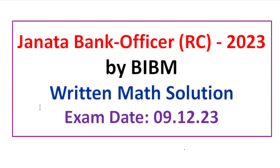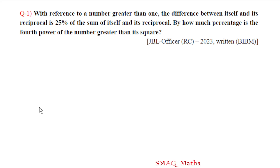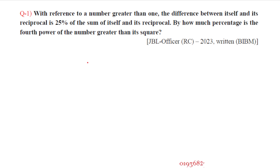Assalamu alaikum, welcome to the written math solution of Janata Bank Officer RC 2023 by BIBM. Let's get started. Question number one: with reference to a number greater than one, the difference between itself and its reciprocal is 25 percent of the sum of itself and its reciprocal. By how much percentage is the fourth power of the number greater than its square?